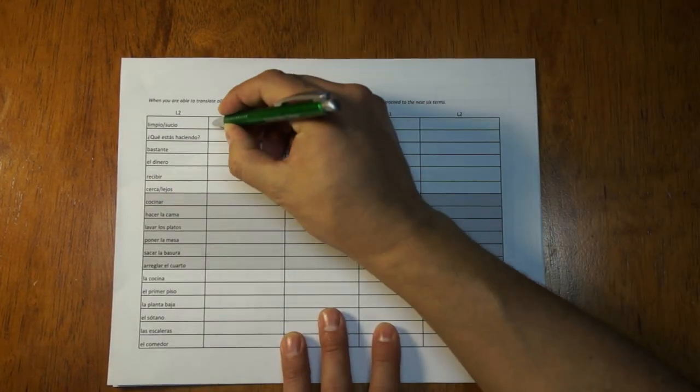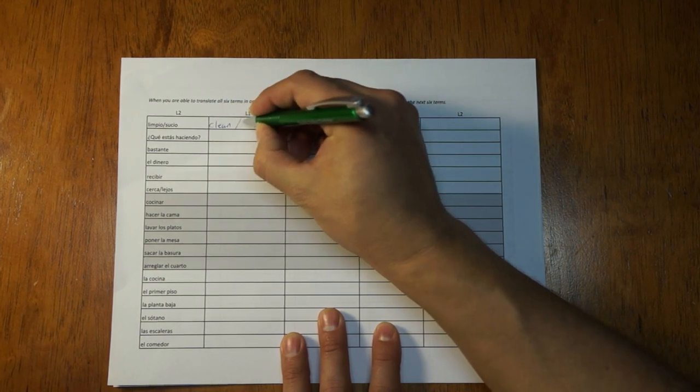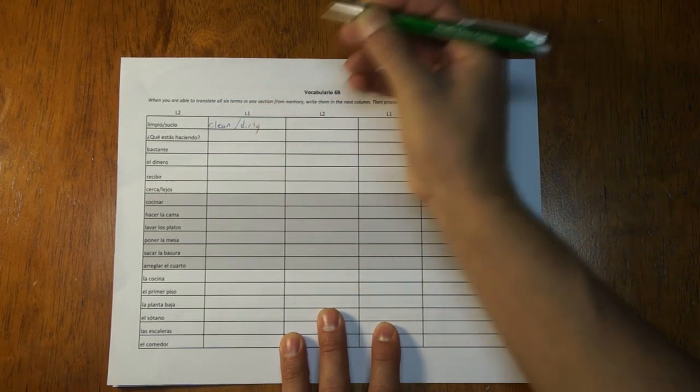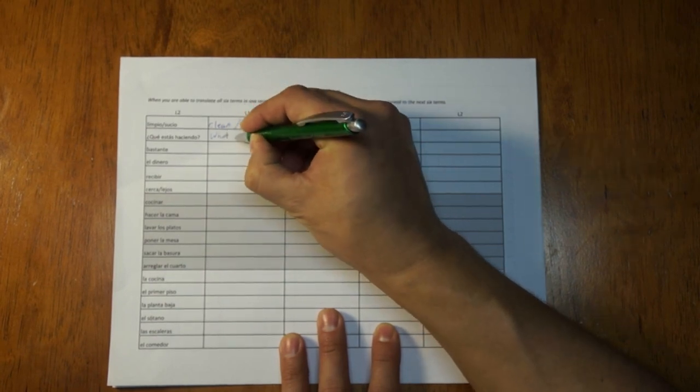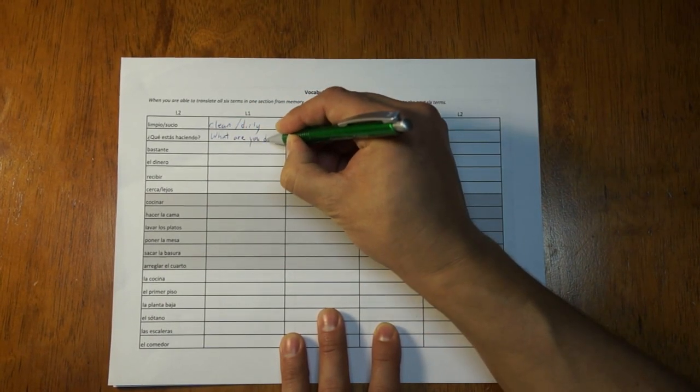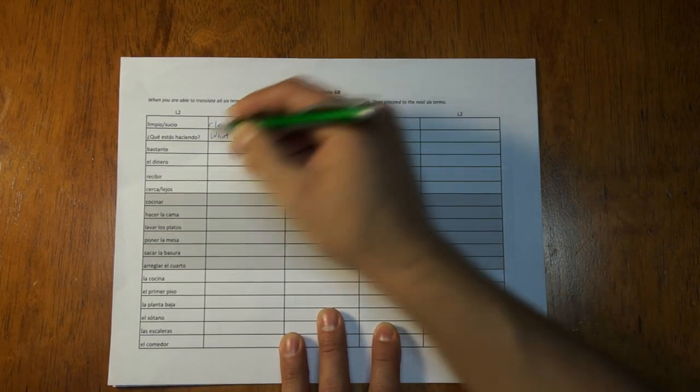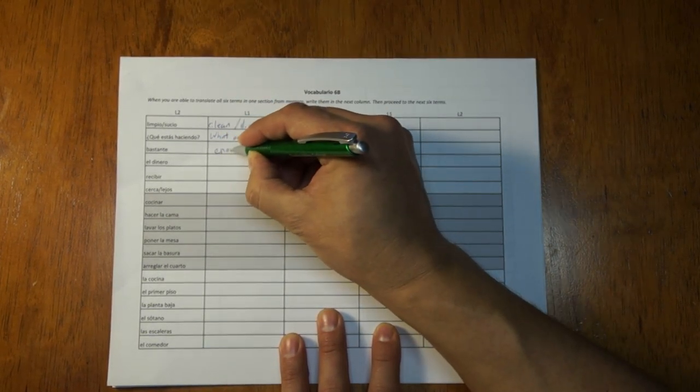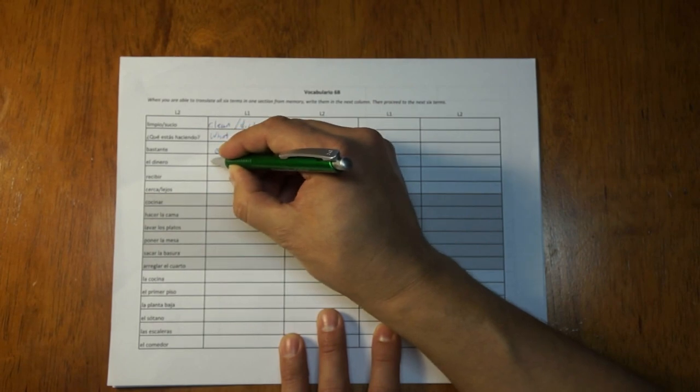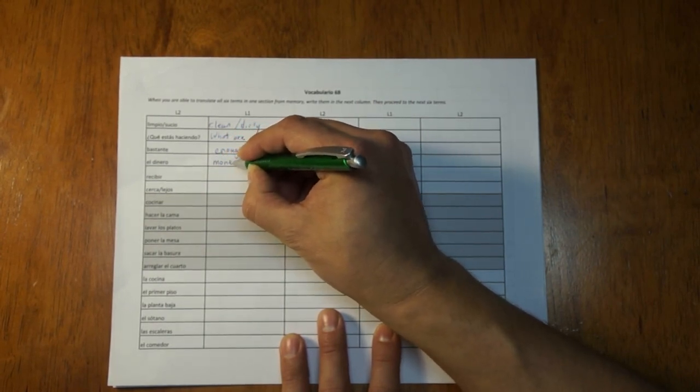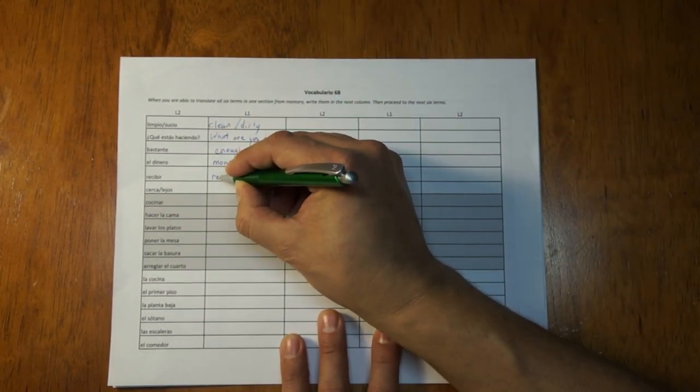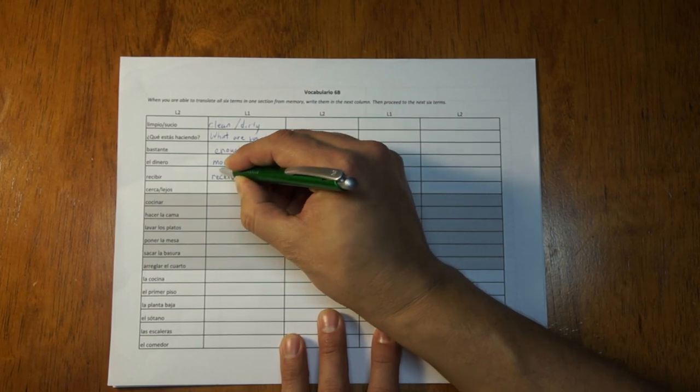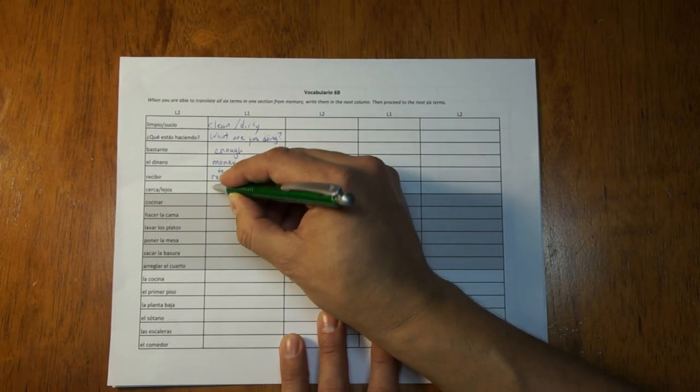Next, I would pick up my pen and write. Clean. Dirty. What. Are. You. Doing. And so this act of writing is, like I said, doing a couple of things. Number one, it's kind of confirming that I really did know them all. If you use a pencil, of course, you could erase if you actually had forgotten. I'd like to put to receive. And near, far.